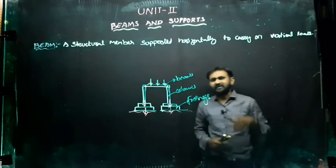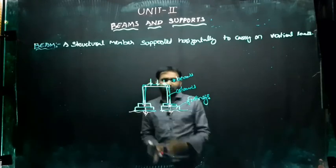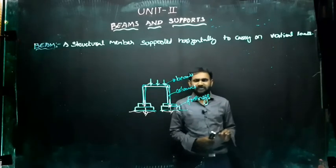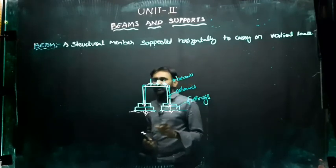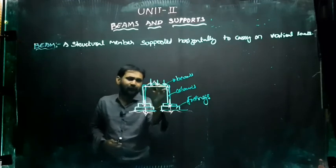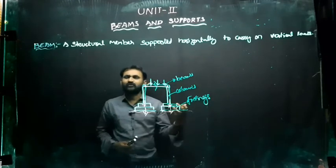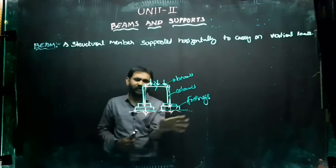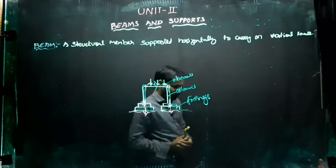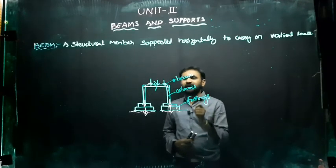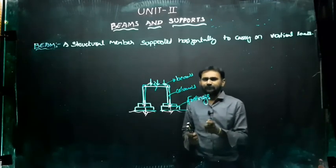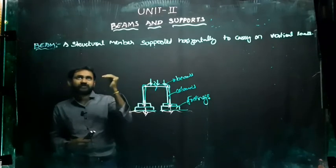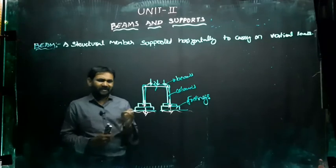These beams take the load from the slab, release it to the columns, from the columns it goes to the footings, and from the footings it reaches the ground safely so that our structure is not damaged. If you construct a weak beam, the beam is going to break, and the entire structure is going to collapse. So for these situations you need to study in detail about the beams — how the beam should be designed, what loads will be acting on it, and how it transfers the load from the roof to the columns.